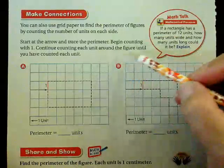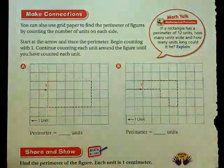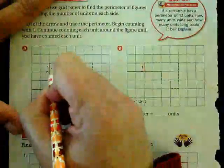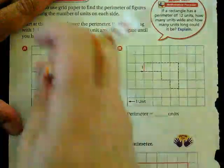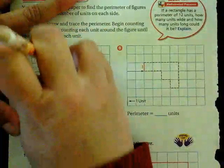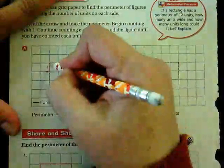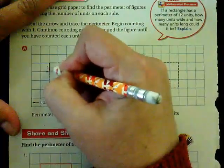Continue counting each unit around the figure until you have counted each unit. So a unit on this one, instead of it being a square like for area, that's not what perimeter is. When we're finding perimeter, we're finding the length of the square.